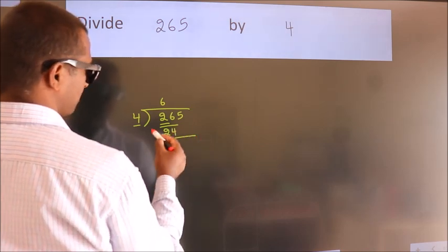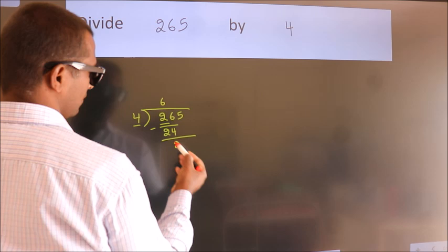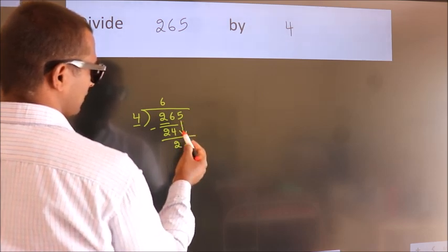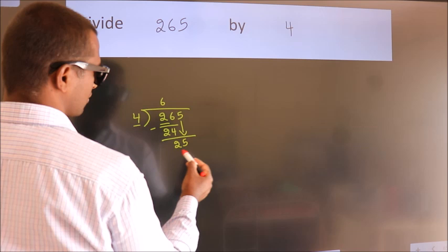Now we subtract and get 2. After this, bring down the next number. So, 5 down, giving us 25.